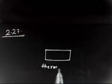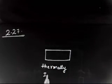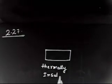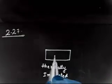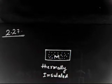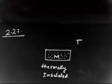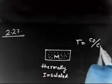Let us discuss problem number 2.27. This says: a thermally insulated vessel containing a gas whose molecular mass is M. So we have a vessel that is thermally insulated, containing some gas. The molecular weight of the gas is M, and gamma — that is CP by CV — is also given to you.